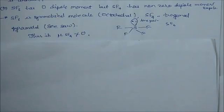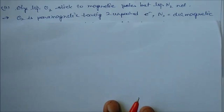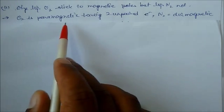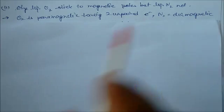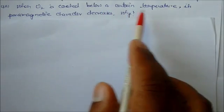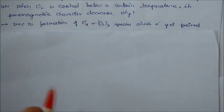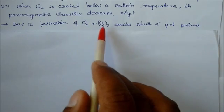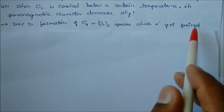Liquid oxygen sticks to magnetic poles but liquid nitrogen does not. Actually, oxygen is paramagnetic with two unpaired electrons, while nitrogen is diamagnetic. When oxygen is cooled below a certain temperature, its paramagnetic character decreases due to the formation of O4 or (O2)2 species in which electrons get paired.